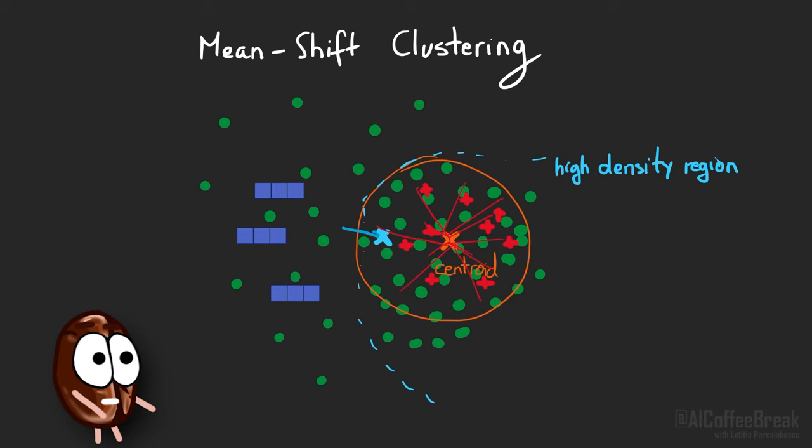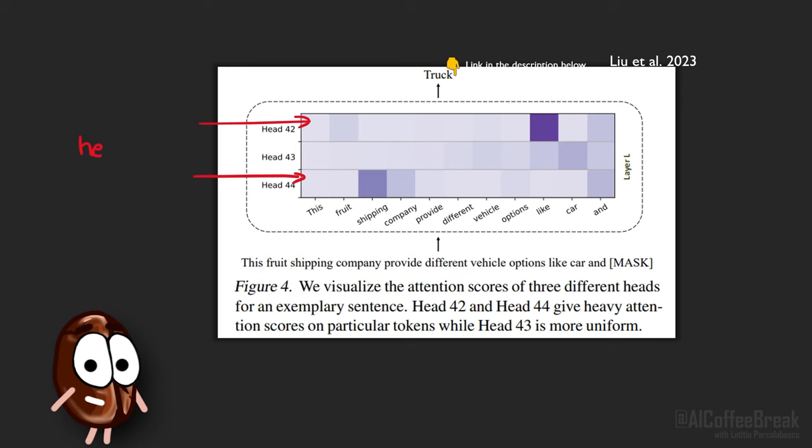So in mean-shift clustering, dense regions get richer, and similarly in attention, similar tokens get more similar and get higher and higher attention scores and form these heavy hitters. In summary, each self-attention head does one mean-shift clustering step to push input embeddings of tokens together and we get heavy-hitter attention heads.